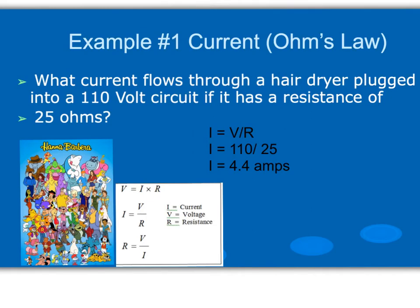In this version of Ohm's law, we have current flow through a hairdryer plugged into a 110 volt circuit. It has a resistance of 25 ohms. What is its current? We will use current equals voltage divided by resistance. We're given a voltage of 110 volts and a resistance of 25 ohms. When we do the math, we have a current flow of 4.4 amps.